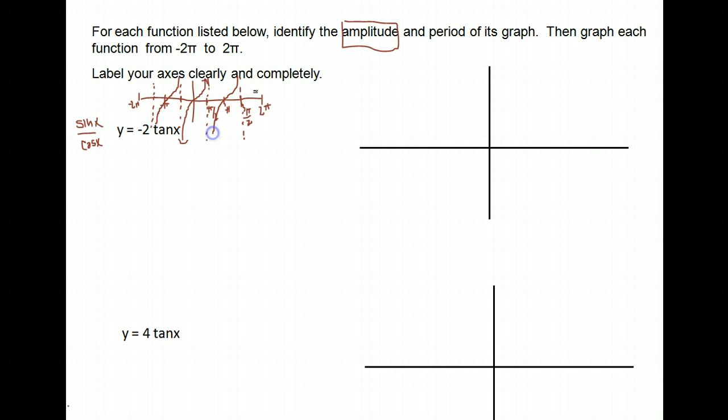Now notice the amplitude is undefined. For sine and cosine, you do have an amplitude, but that's because it describes your waves. Tangent doesn't have those, so amplitude is undefined no matter what you're multiplying by in front of that tangent. It will affect your graph multiplying there, but it doesn't have an amplitude. So for both of these, our amplitude is going to be undefined.